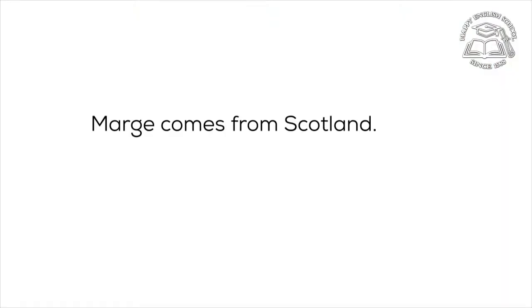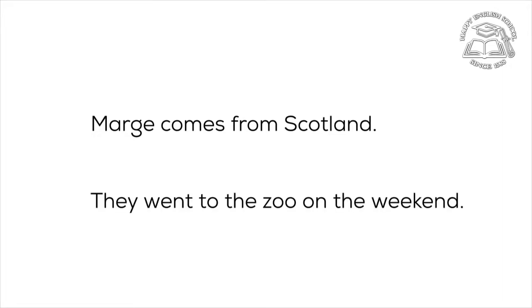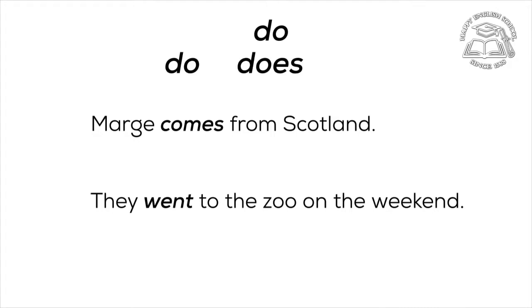But what if the auxiliary verb is not that obvious? What should we do? 'March comes from Scotland.' 'They went to the zoo on the weekend.' In both these sentences we can see only main verbs — 'comes' and 'went'. That means the auxiliary verb is 'do', and it can appear in three different forms: do, does, or did.